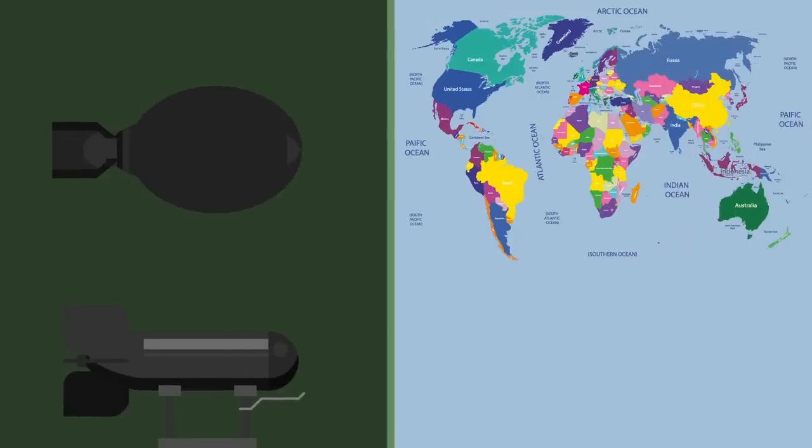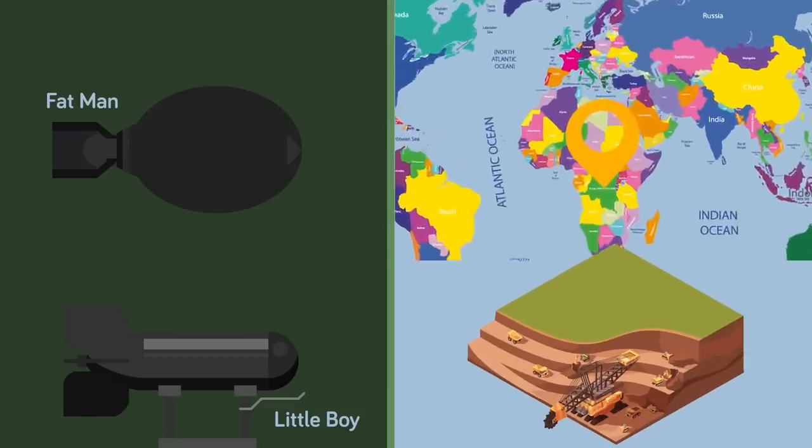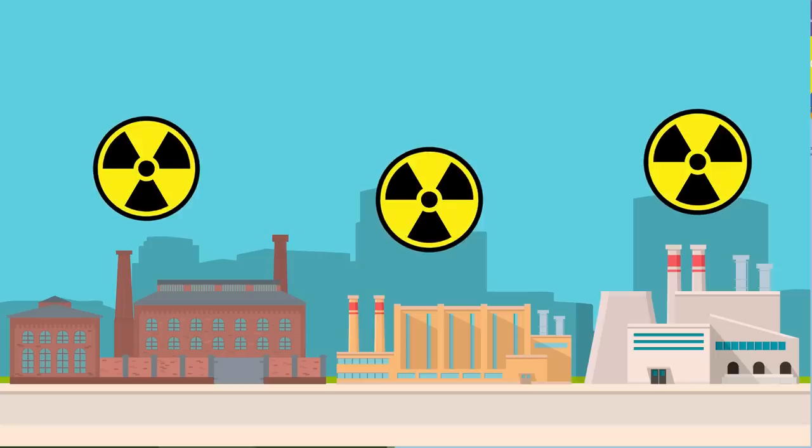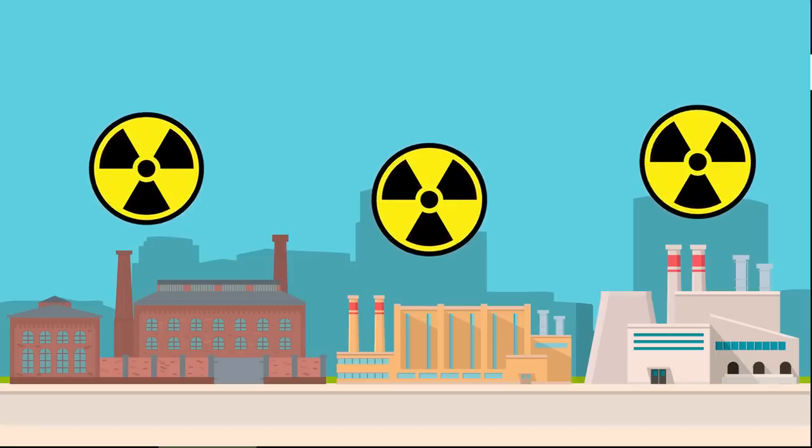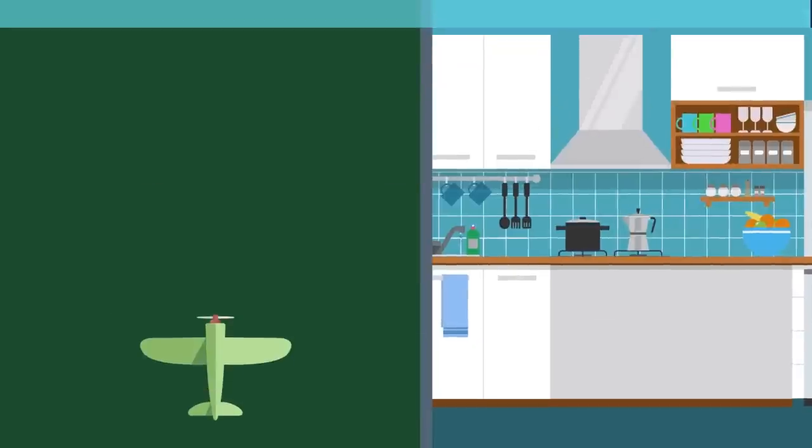48. Most of the uranium used in the Little Boy and Fat Man nuclear bombs came from a single mine in what is today the Democratic Republic of the Congo, shipped to the US by a Belgian mining firm. 47. Three different manufacturing plants were used in developing the Fat Man and Little Boy nuclear weapons so that no one plant would have the complete designs.